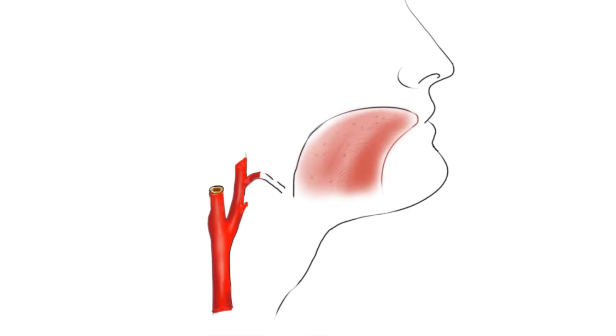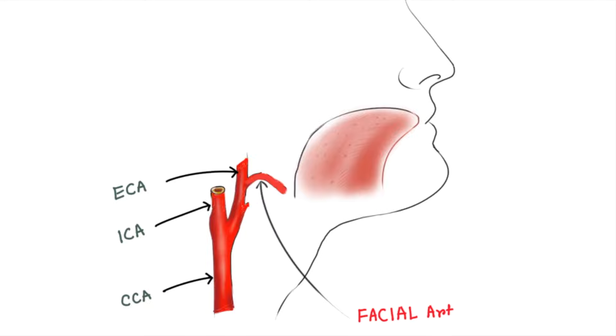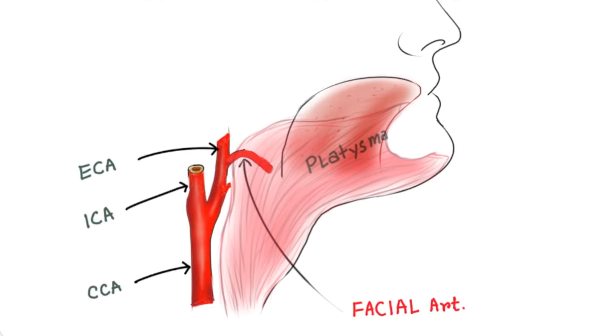Welcome to this video discussing the facial artery and its branches. In the picture, you can see the common carotid artery, which divides into the internal carotid artery and the external carotid artery. The facial artery originates from the external carotid artery and initially lies beneath the platysma muscle.